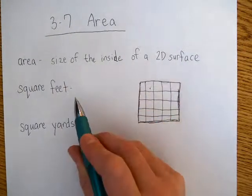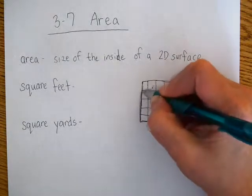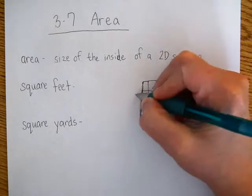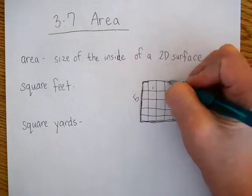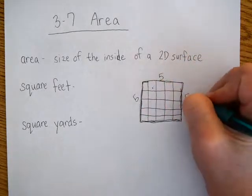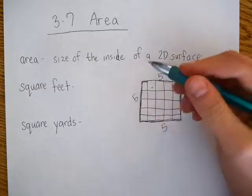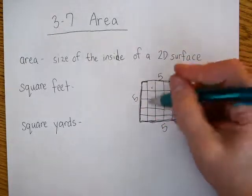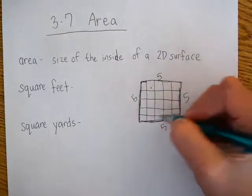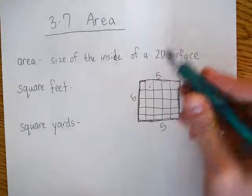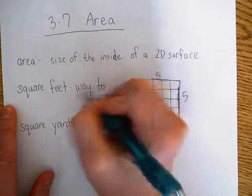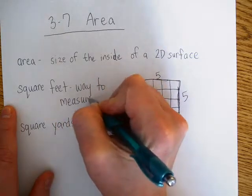Square feet is one way to measure area. So if we measure the side of the square here and we say each of these are feet: 1, 2, 3, 4, 5. And 1, 2, 3, 4, 5. So it might be 5 feet and 5 feet. That tells me I can measure the area in square feet. I'm going to say 5 times 5, and that will be 25 square feet. So square feet is a way to measure area.